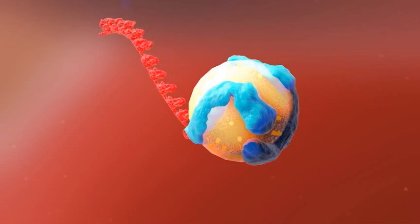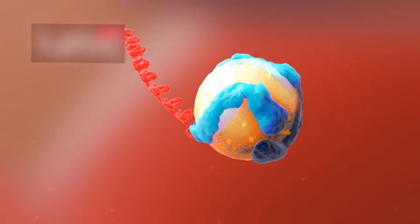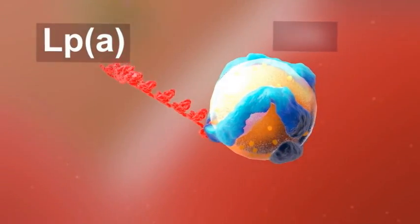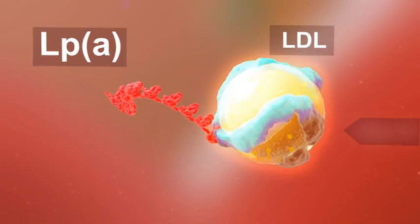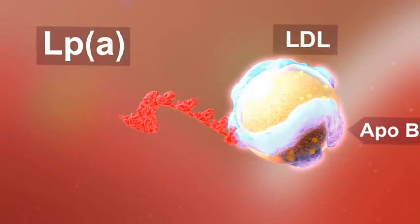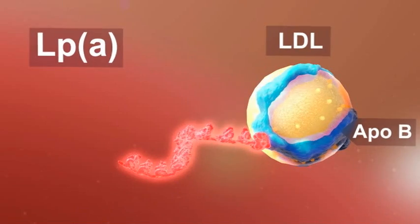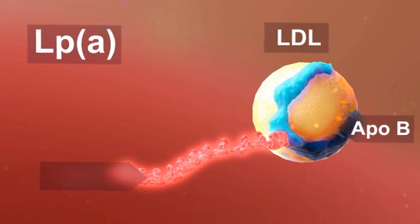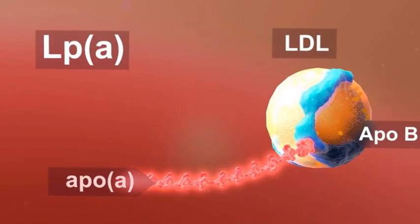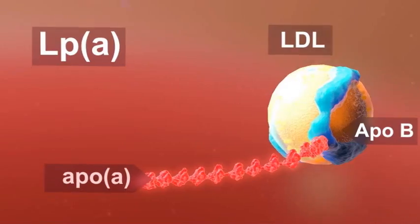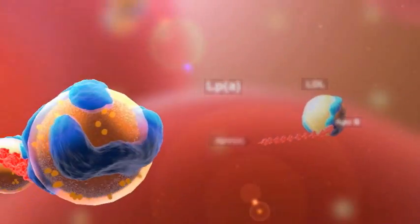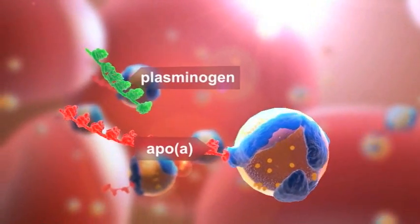Lipoprotein little A is an atherogenic APOB containing lipoprotein that consists of an LDL particle in which the APOB molecule is attached to a separate, variably sized apolipoprotein called apolipoprotein little A or APO little A. APO little A bears a structural similarity with plasminogen,